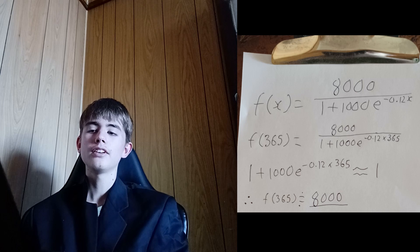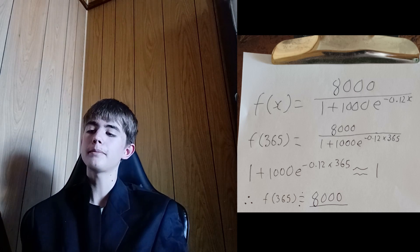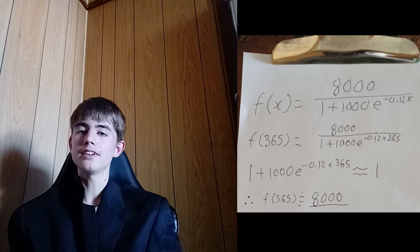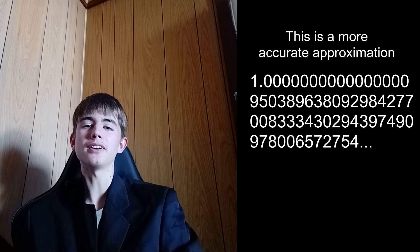Now, 1 plus 1000 e to the power of negative 0.12 times 365, off the top of my head, is 1. But this is not 1. That is a calculator error. My genius brain knows better than that. It's actually a smidgen more than 1. But the smidgen doesn't really matter for counting infected people. You can't have an infinitesimal amount of infected person. So we'll just say it's 1.